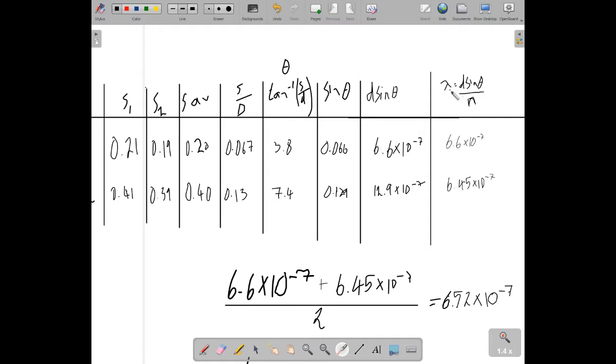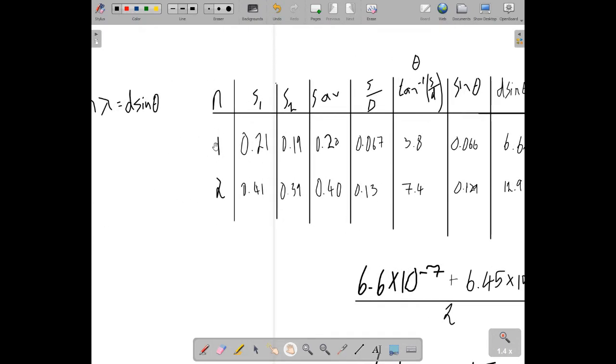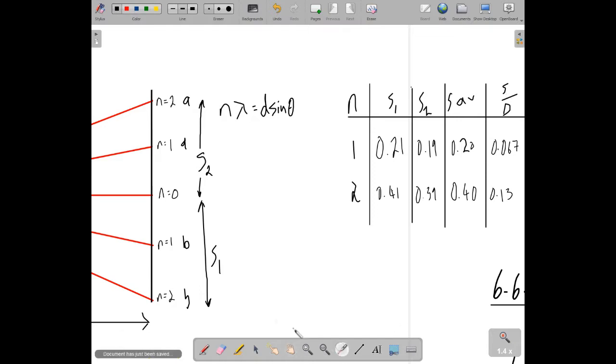So I've now got d sine theta. And to find lambda, I just have the formula n lambda is d sine theta. So I divide d sine theta by n to give me lambda. So I'm dividing by n, and n is the order of the fringe. So the first order and the second order. Dividing by 1 shouldn't give you many surprises. Dividing by 2 for the second order, these second order bright spots that appear over here.